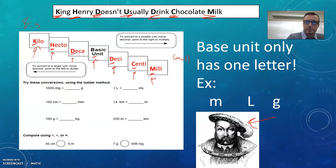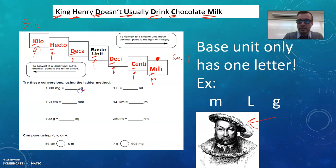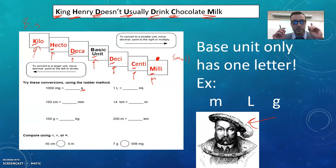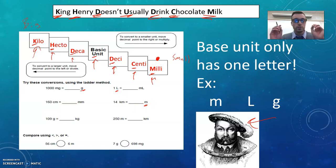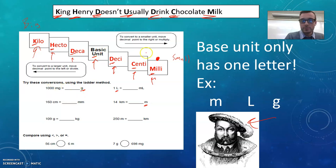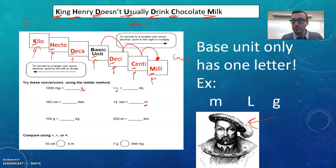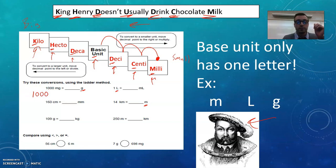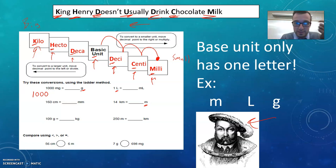A thousand milligrams — so we're starting right here at milli, and we want to go to grams. If you're saying you don't see grams on this step ladder, that's because if you see something that's just "grams," or just "liters," or just "meters" with no prefix, that is your base unit. So to go from milligrams to grams, you're going to go one, two, three places — and which way? To the left. That means if I want to take 1,000 milligrams and convert it into grams, I have to take the decimal place three places to the left.